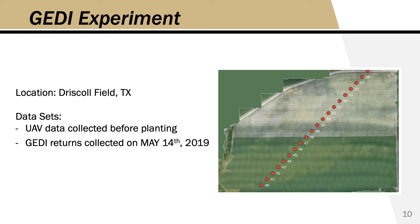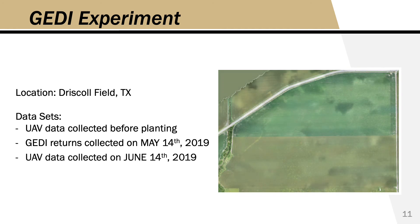Finally, since the first UAV dataset only shows the ground elevation, we need a dataset showing where the top of the canopy is located. We have another DSM collected on June 14th, a month after the GEDI pass, which will be used to indicate the top of the canopy.